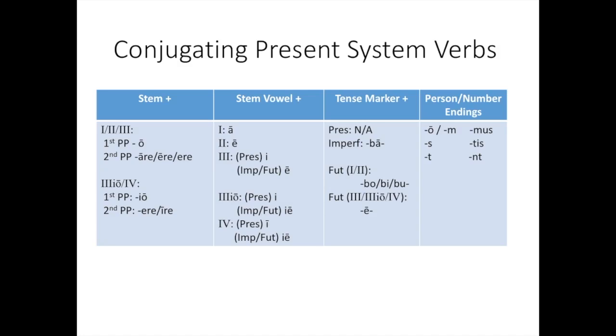Then you find the stem in the same way for third IO and fourth. So that's why we're going to pair all of these together. They follow very much the same patterns for third IO and fourth conjugation verbs. So I will provide an example that is from the third IO, and you will do an example from the fourth conjugation, applying the same basic pattern.